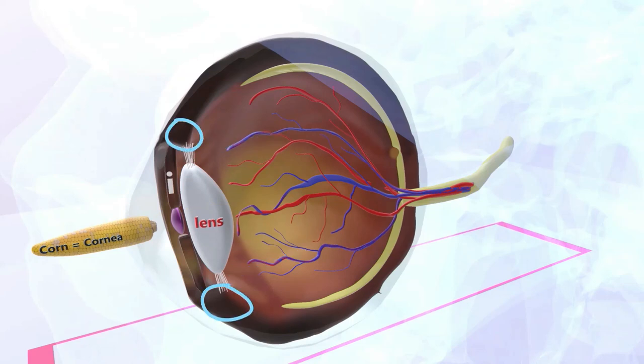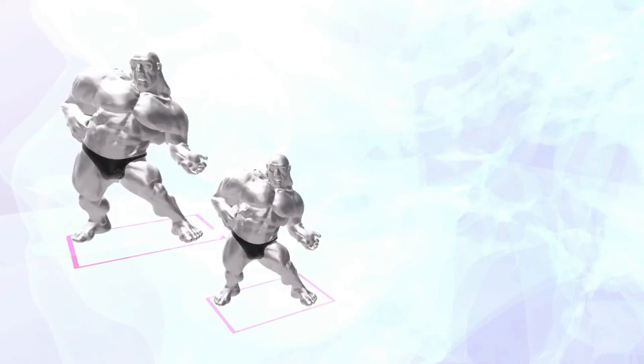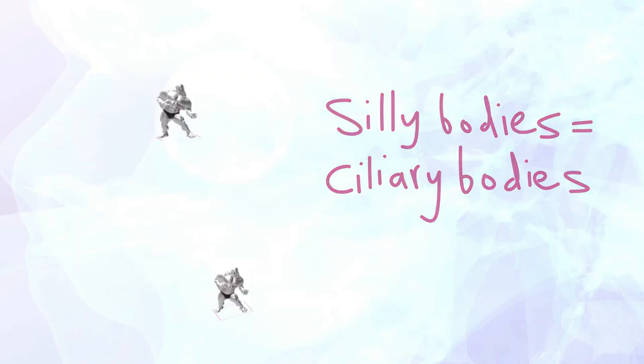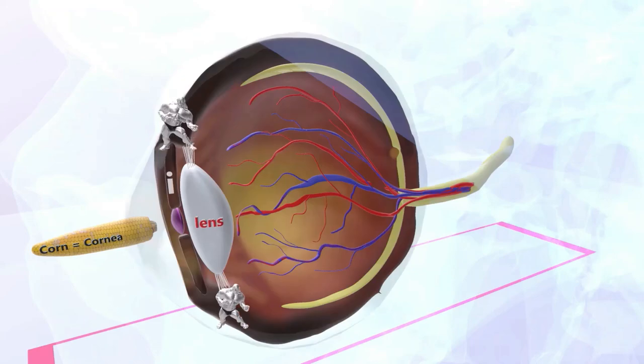I'm gonna have these guys over here with the silly bodies, who we could see better over here. Again, silly bodies for ciliary bodies. So these guys are going to remind us that the ciliary bodies control the muscles involved in changing the shape of the lens. Now there is another function of the ciliary bodies, and that's that they produce the aqueous humor.